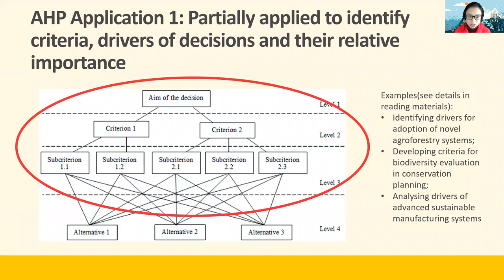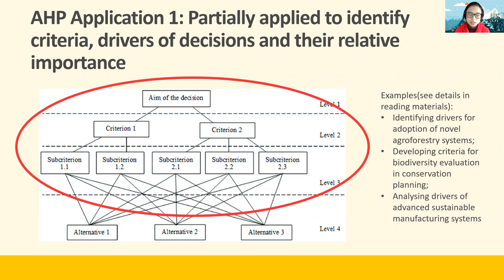For land use decisions, broadly speaking, there are two ways to use AHP. The first option is to use some parts of the AHP process to identify criteria considered, or drivers of land use decisions, and their relative importance. The first stage of AHP is to clarify what land use decision you're trying to make — for example, deciding whether and where to expand agricultural land, or selecting the best conservation strategy. Once the final aim is clear, we then identify the criteria and sub-criteria that will be used to make such a decision, as well as their relative importance to the decision makers.